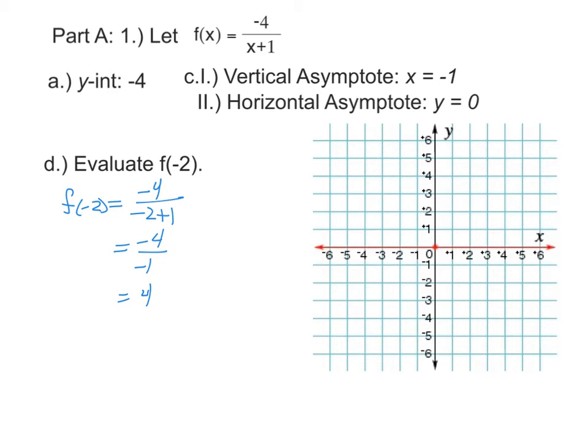The reason that I have you do that is you just found one ordered pair - an ordered pair that has -2 for an x-coordinate and positive 4 for a y-coordinate. This is going to be very helpful when we're doing the graph.